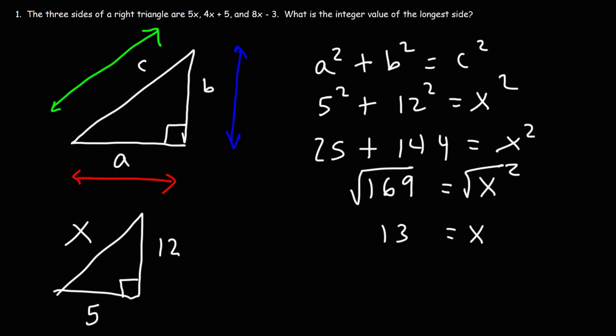It's plus or minus 13, but when dealing with the length of a side, we're going to use a positive value. We're not going to use a negative value to represent the length of something. So we go with positive 13 — that is how long the hypotenuse, the longest side of the triangle, is.